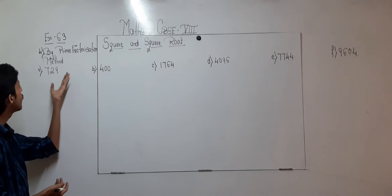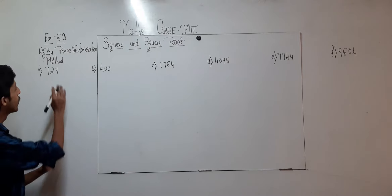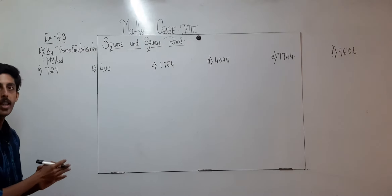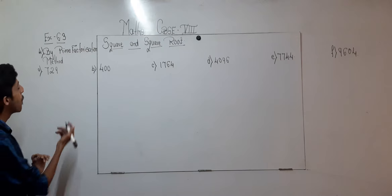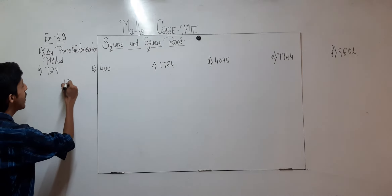The first question here is 729. We need to find the square root of 729 by the prime factorization method.